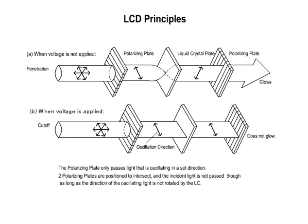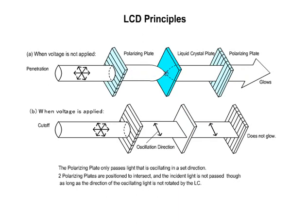The simple matrix system is called the STN, super-twisted nematic, system. In this system, voltage is applied at the intersection of the X-axis and Y-axis. It is inexpensive. However, the response speed of the picture elements is slow.